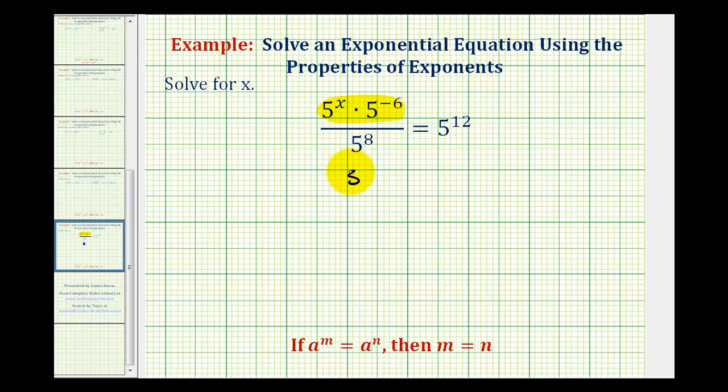So this would be five to the power of x plus negative six or just x minus six divided by five to the eighth equals five to the twelfth.